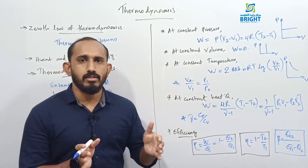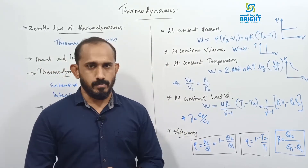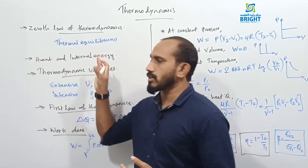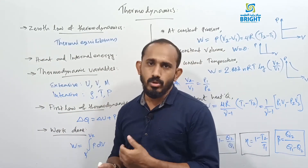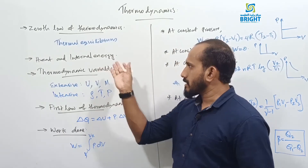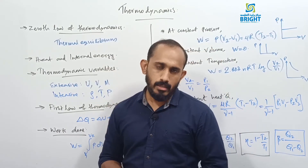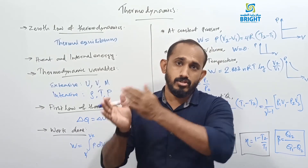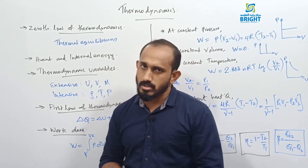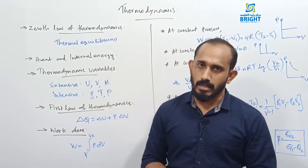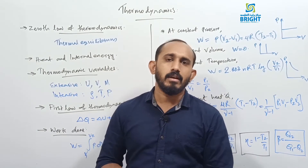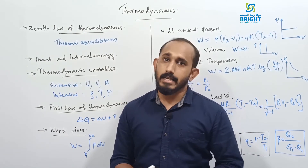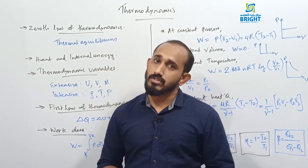Heat has the unit joule, and energy also has the unit joule. However, heat can flow from one system to another if there is a temperature difference, whereas internal energy cannot flow like that. The energy of molecules can increase or decrease by variation in temperature.